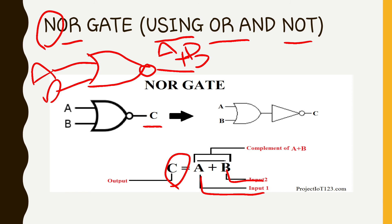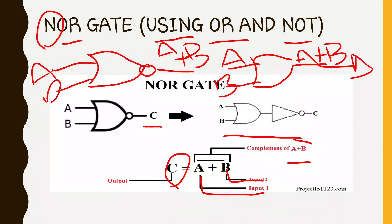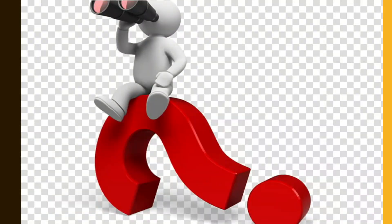If we look at this diagram, it will be A and B going through the OR gate and then the NOT gate to produce the NOR output. This completes our circuit for NOR gate using basic gates. Thank you, God bless you.